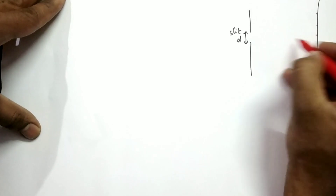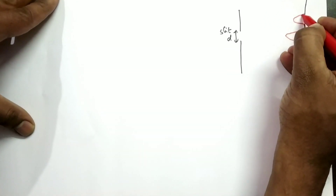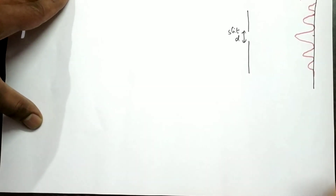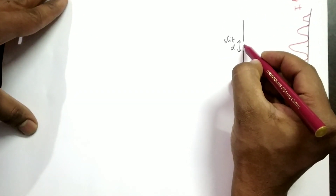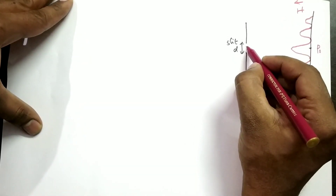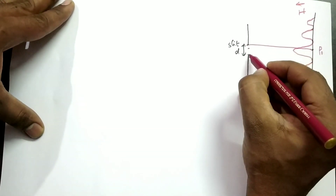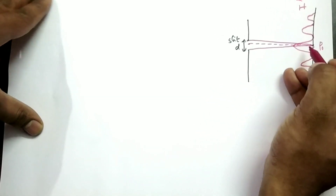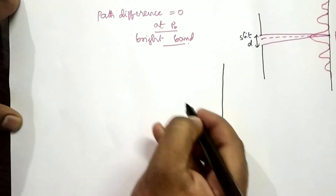Now let me explain how these bright and dark fringes are happening. The intensity of light is more at the center and goes on reducing on either side, both left and right, as we have seen in the experiment. So why does this happen? Let us see the point P₀ where the central bright fringe is formed. The light coming from the two edges of the slit reaches point P₀ and there will not be any path difference. As the path difference is zero, the bright band is formed at P₀.